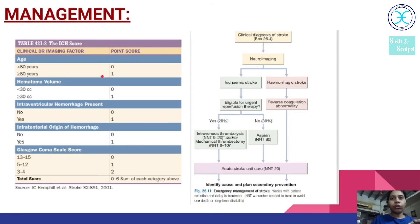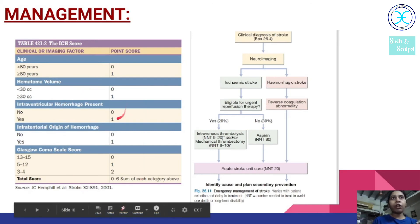There is a score for hemorrhagic type of stroke which is called the ICH score. Based on the age, hematoma volume, intraventricular hemorrhage present or not, infratentorial origin of hemorrhage, and then based on the Glasgow Coma Scale. Based on this point score, it tells us about the morbidity present in the intracranial hemorrhage type of stroke.